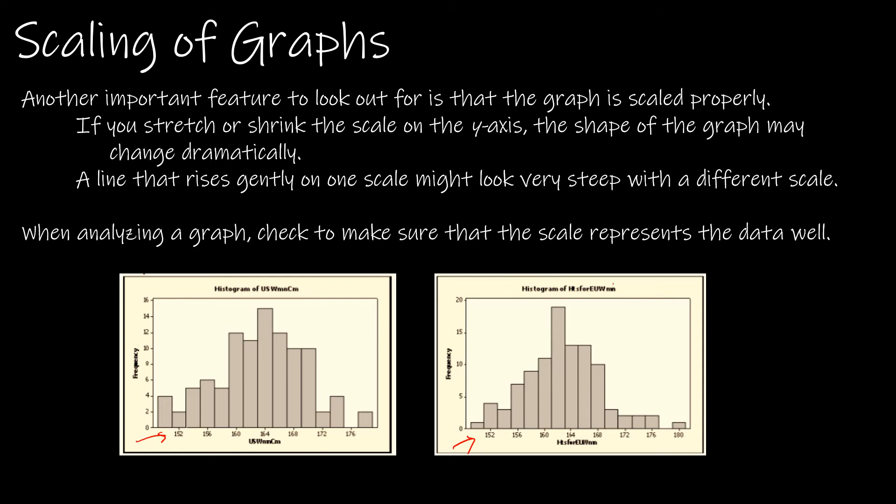So even though their scales on the horizontal axis appear to be scaled the same, on the European women, we're going by fives and with a max of 20. And on the US, we're going by twos with a max of 16. So when you're comparing two different data sets, the scale needs to be the same.